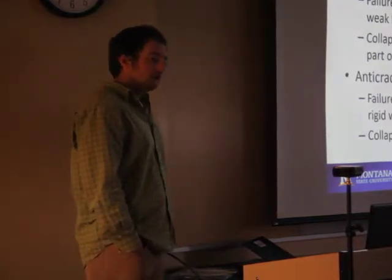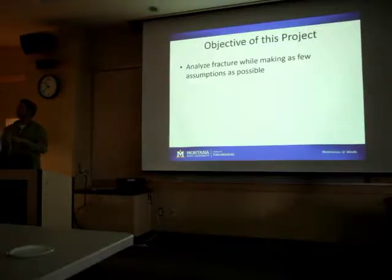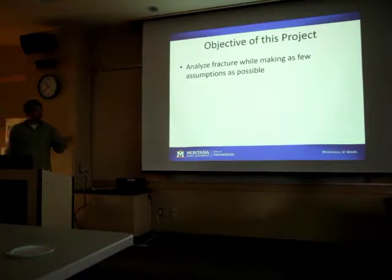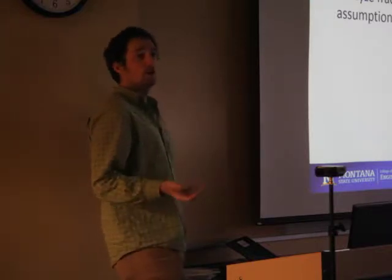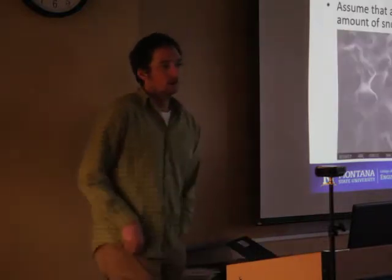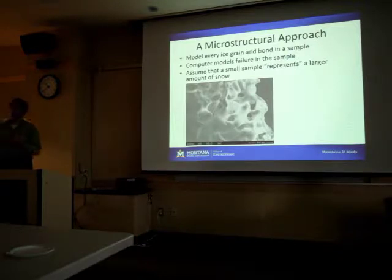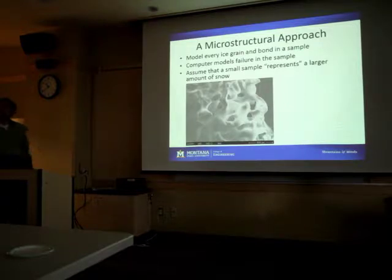Because we have two models that give pretty different results, I wanted to come up with a project to analyze the fracture process in the snowpack, making as few assumptions as possible about these macroscopic processes. We're not assuming it's a shear fracture through the weak layer. We're not assuming collapse has anything to do with it. We're trying to go back to basics and get a third opinion on how the failure process works in snow by looking at the microstructure - every single grain and every single bond.